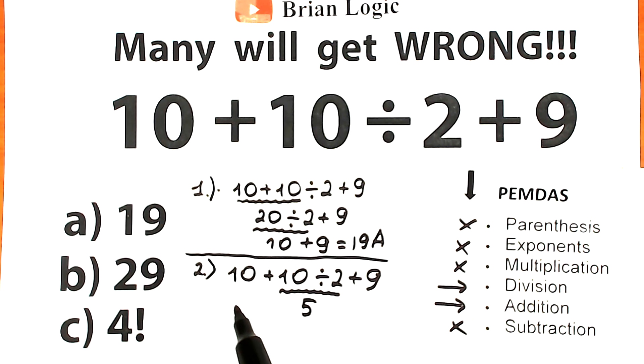So 10 divided by 2 equal to 5. And let's rewrite our expression. So we still have 10 plus 5 and plus 9. So we complete this division part. And if we add it, we have 10 plus 5, 15, 15 plus 9 equal to 24.